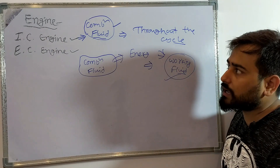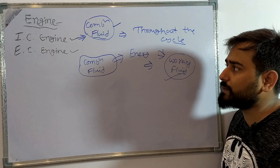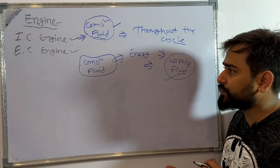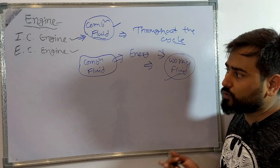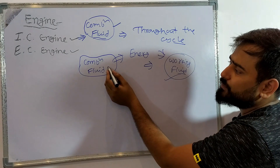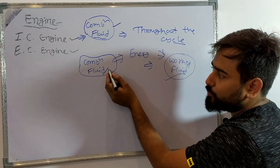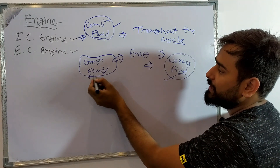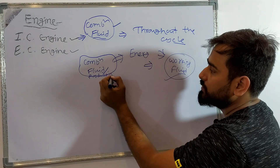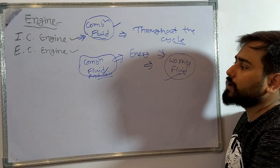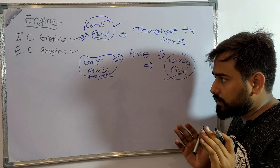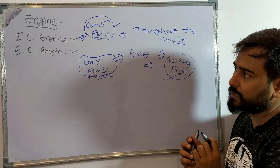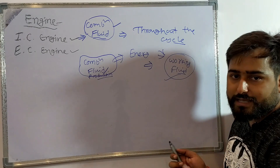In the IC engine, what is the combustion fluid? You can tell if you have read it — it is air plus fuel. The fuel can vary depending on the engine type. In the IC engine, combustion fluid and combustion product — if we talk about something like coal, combustion product is more relevant. This is a major difference. There are also many other differences.